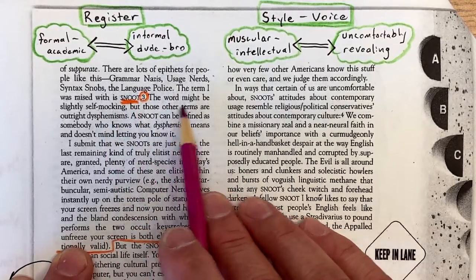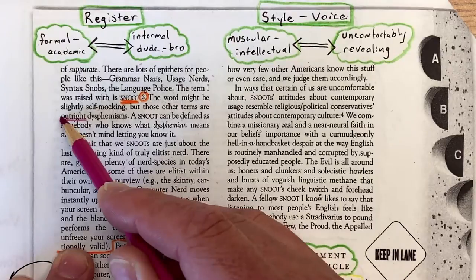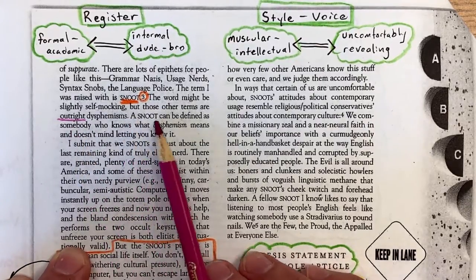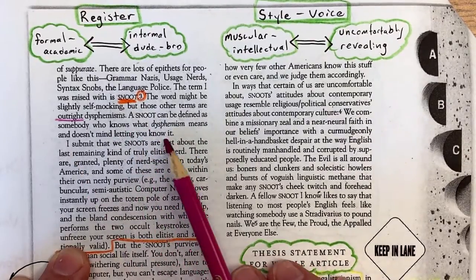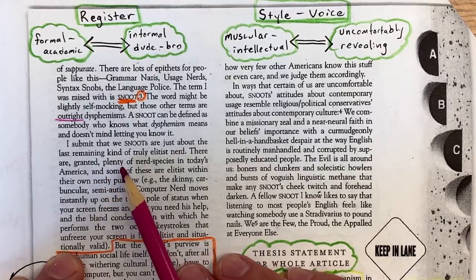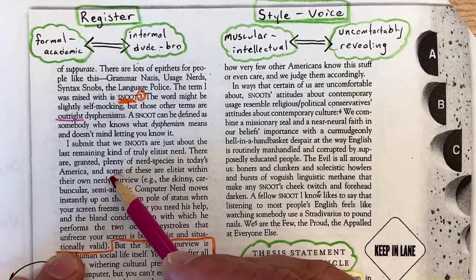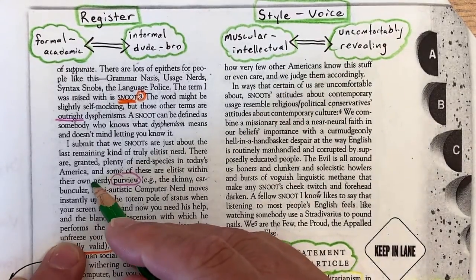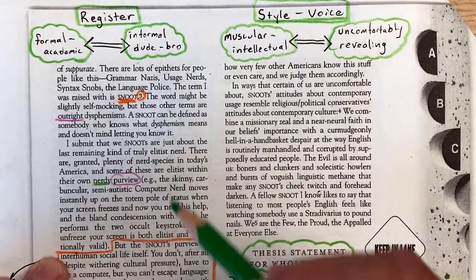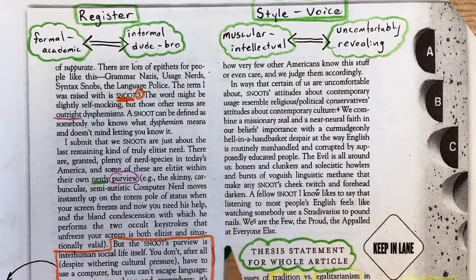The term I was raised with is snoot. The word might be slightly self-mocking, but those other terms are outright dysphemisms. 'Outright' is not a formal academic word — it's kind of like, 'Yeah man, it's an outright lie.' A snoot can be defined as somebody who knows what dysphemism means and doesn't mind letting you know it. 'I submit that we snoots are just about the last remaining kind of truly elitist nerd.' He uses 'nerdy' — an informal dude-bro word — to modify 'purview,' a very sophisticated word. He'll switch quite dynamically, even within one sentence.